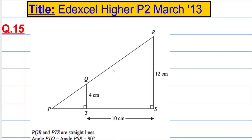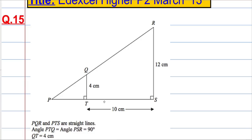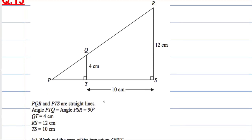In question 15 we have this diagram here. We've got PQR and PTS are straight lines. The angle PTQ equals the angle PSR and they're both equal to 90 degrees. QT is 4, RS is 12 and TS is 10.